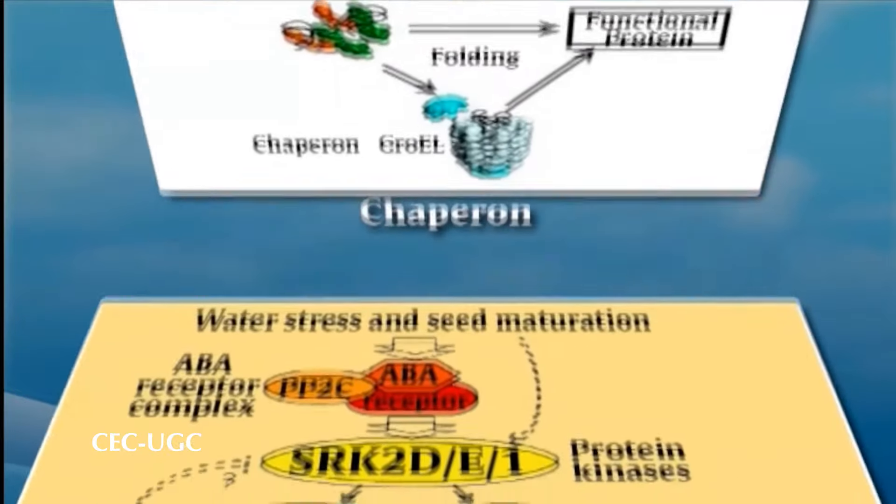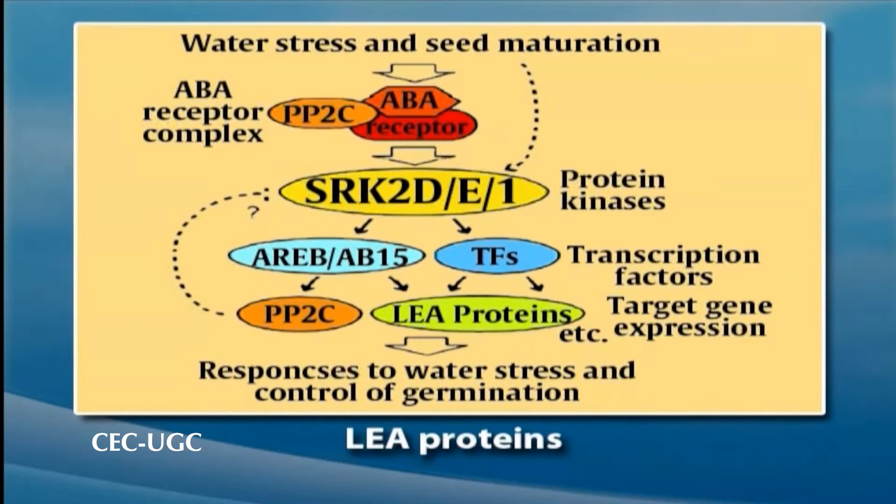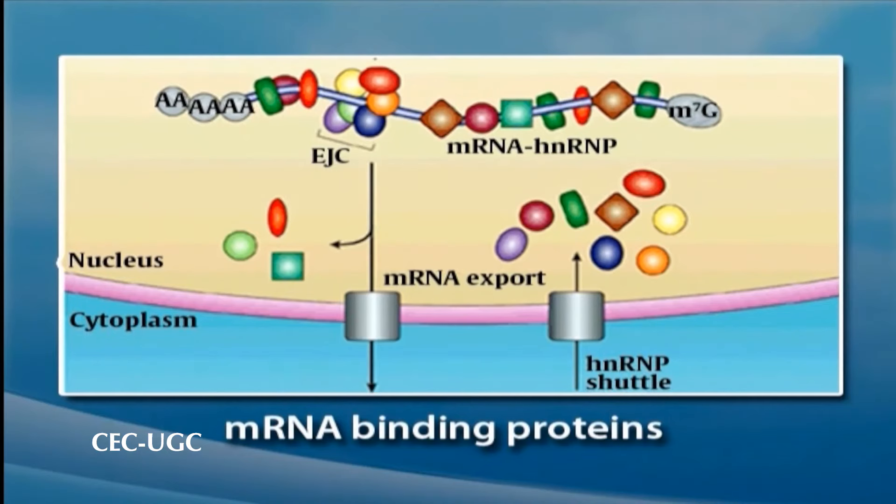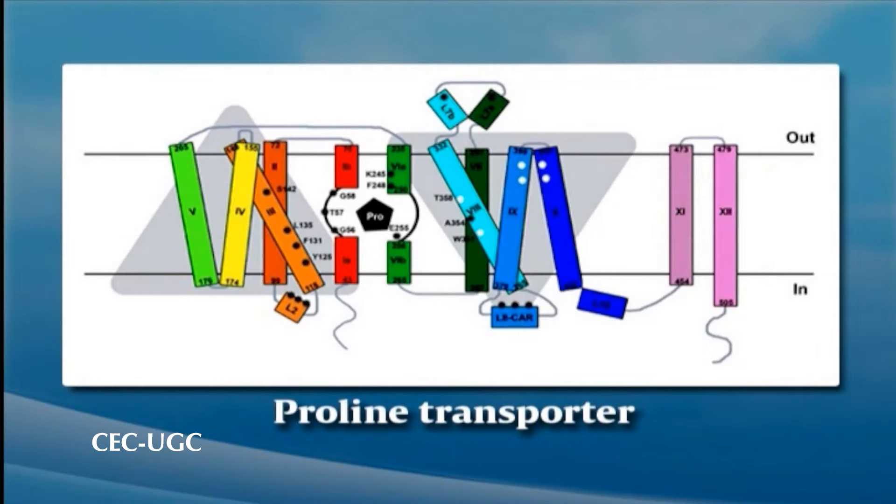The first group, functional proteins, includes proteins that function in abiotic stress tolerance and include molecules such as chaperones, late embryogenesis abundant (LEA) proteins, osmotins, antifreeze proteins, messenger RNA binding proteins, key enzymes for osmolyte biosynthesis, water channel proteins, sugar and proline transporters, detoxification enzymes and various proteases.